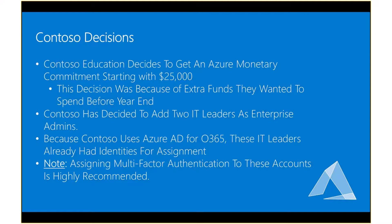We're going to take everything we just talked about and turn it into decisions that Contoso Education is making. Contoso Education has decided to get an Azure monetary commitment and they're going to start with $25,000. You could start with the minimum or put an amount in above the minimum. In Contoso's situation, they made the decision to put $25,000 in because they had some extra funds they wanted to spend before year end. Once it's in there, they can do whatever they want with those funds. We'll talk a bit later in the video series about how they could actually spend some of that right away with what is known as reservations — virtual machine reservations.